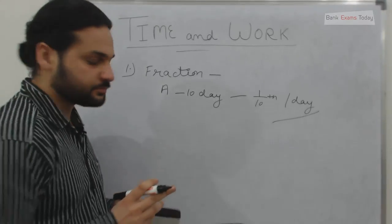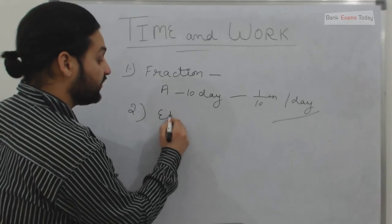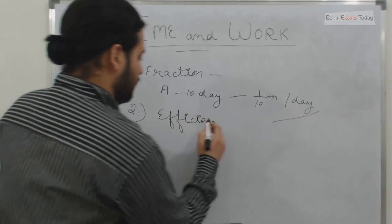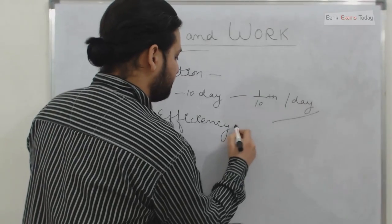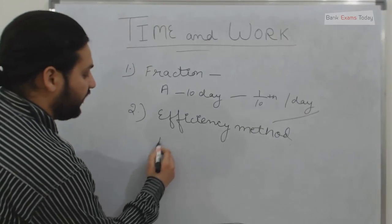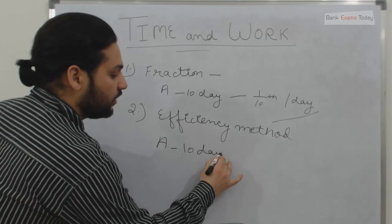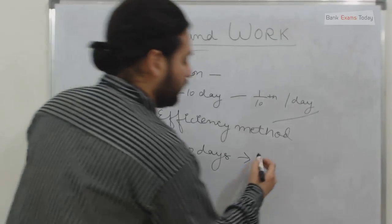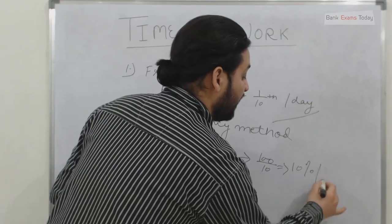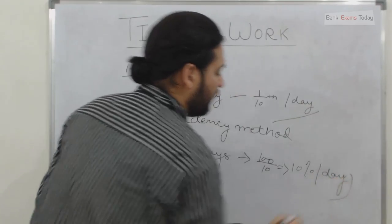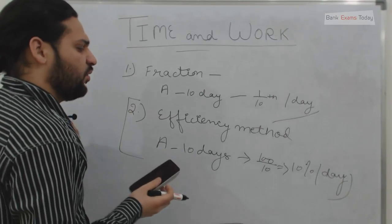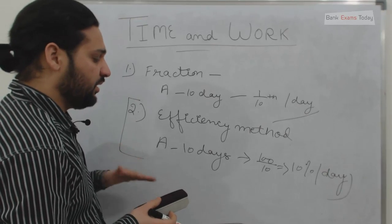The second method uses efficiency in percentages — I call it the efficiency method. This is a better and easier method. If A can do a job in 10 days, that means he can do 100 divided by 10, which is 10 percent of the job in one day. This method simplifies every question and minimizes the time consumed in solving each question.